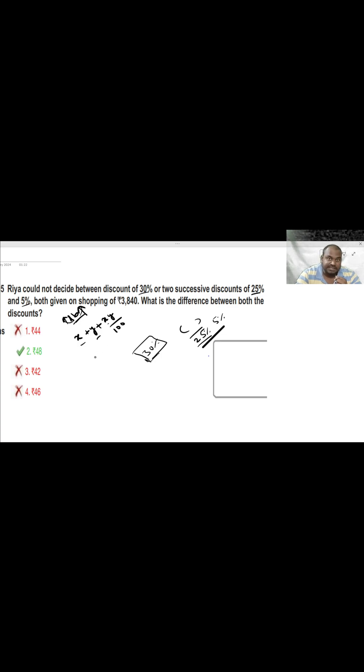But in case of discounts, we will just put minus here. So minus x plus minus y plus minus x into minus y is plus xy divided by 100. So we will use the same formula to find out the net discount for 25 percent and 5 percent.